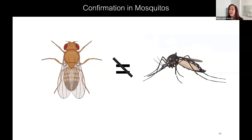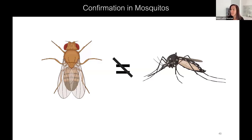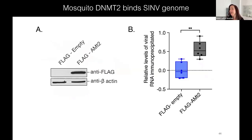But flies are not mosquitoes — there are massive differences in their physiology. It's been great to take advantage of the genetic tools in flies for large-scale screens and identify potential targets, but it's really important to translate findings into the mosquito system. Does mosquito MT2 also bind the Sinbus virus genome? We performed the same immunoprecipitation experiment overexpressing flag-tagged MT2 in mosquito cells, and indeed we get an enrichment of the Sinbus genome when we pull down flag-tagged MT2 compared to empty vector.